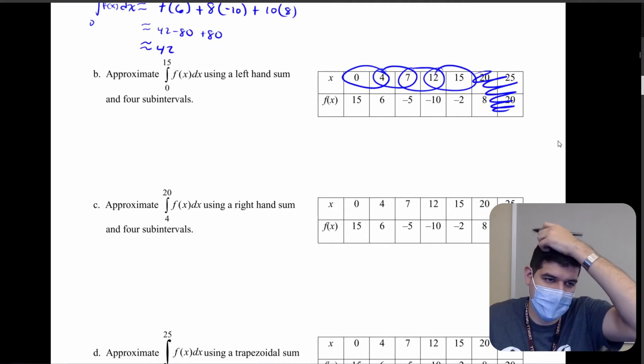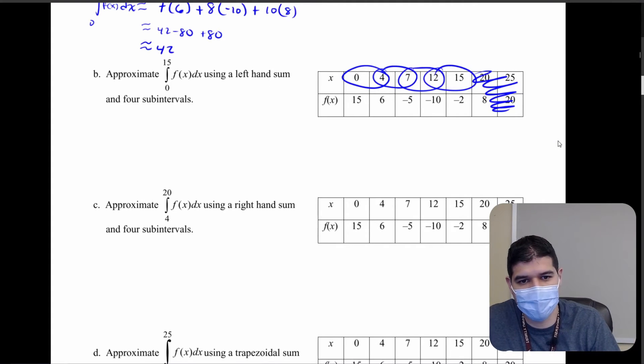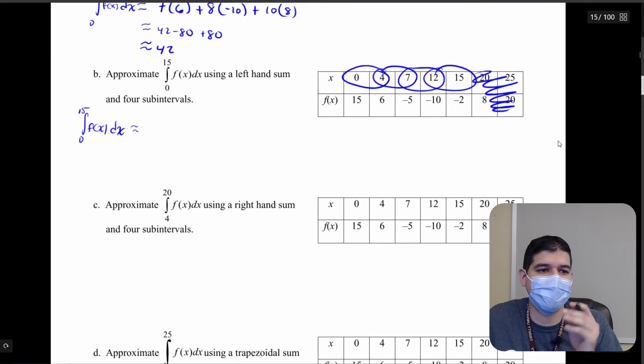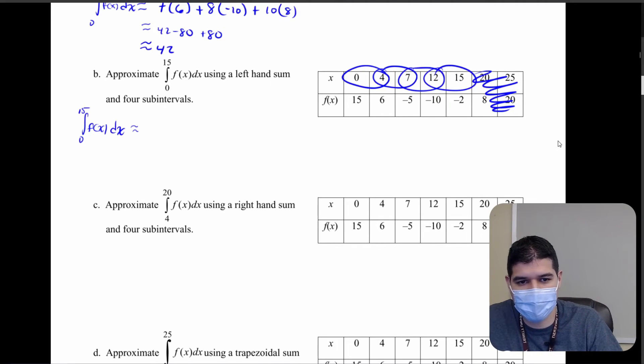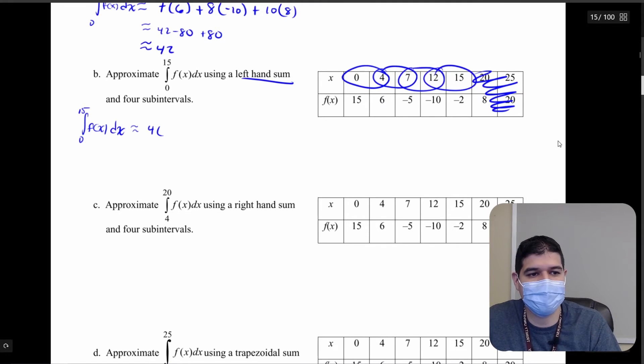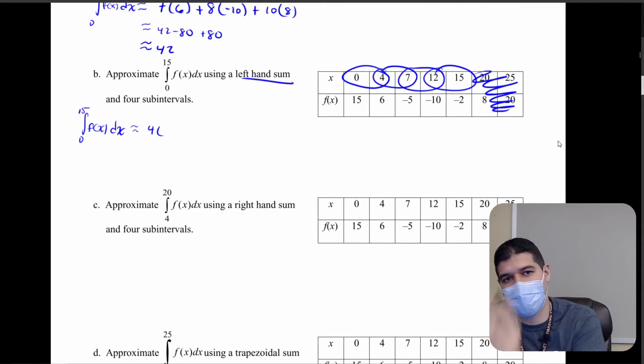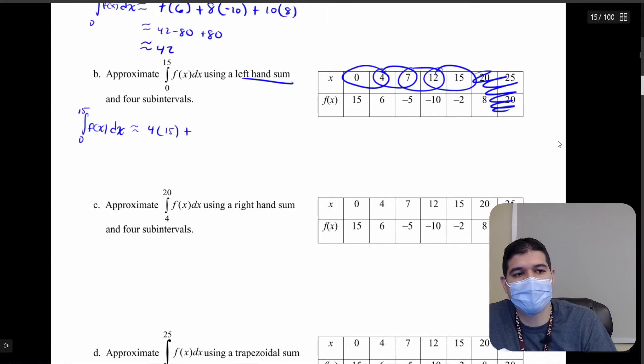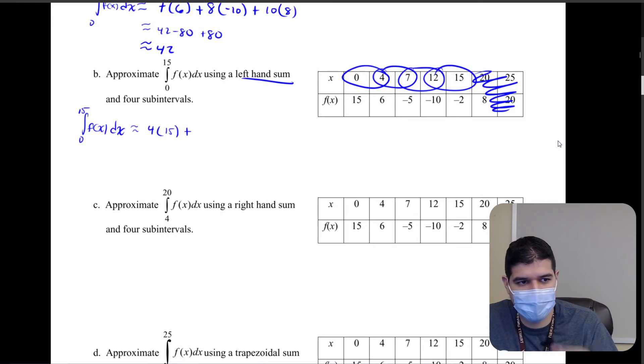That's the left hand sum and we're going from 0 to 15. So the integral from 0 to 15 of f of x dx. What is the base of my first rectangle? Well from 0 to 4 that is going to be a base of 4 and what is the height? Well we are using left hand sum so I need to grab the left hand of that interval. So that's f of 0 which is going to be 15 plus our next interval which is going to be a base of 3 and the height we're going to grab the left one so that's going to be f of 4 which is 6.